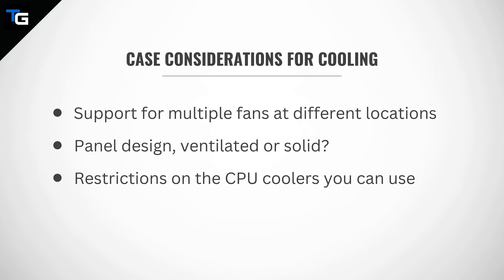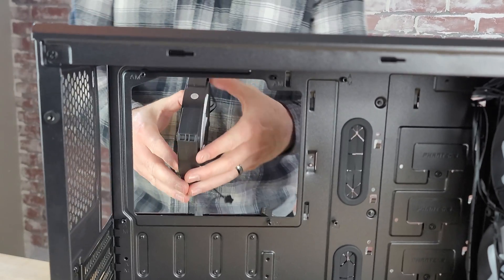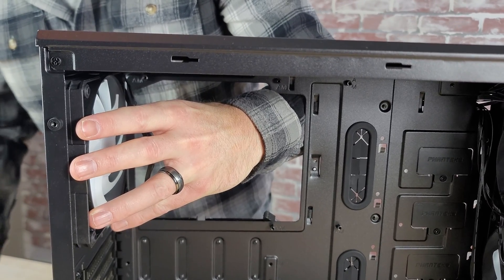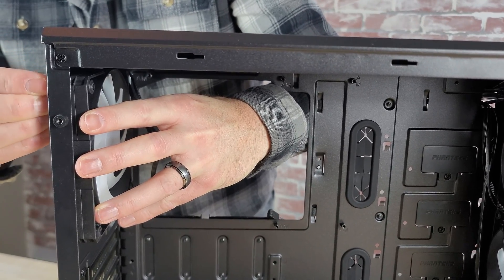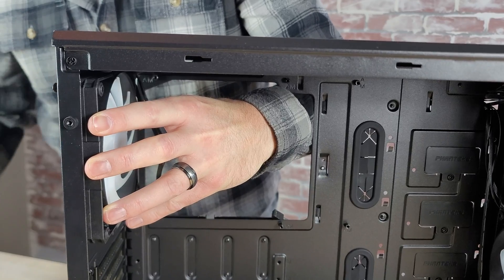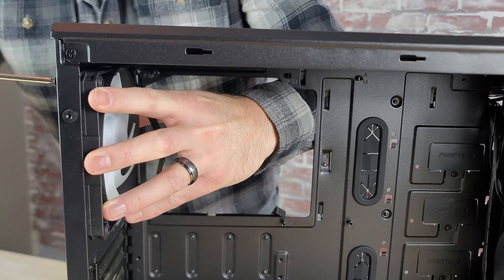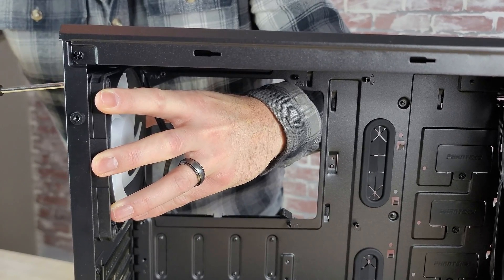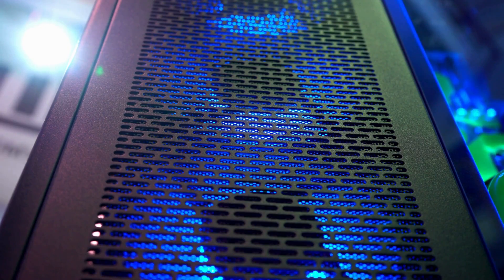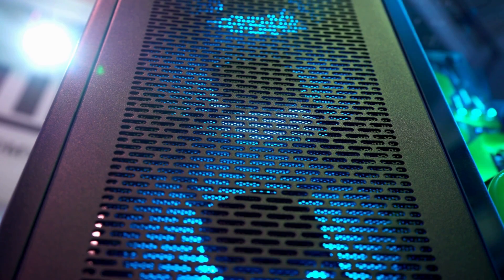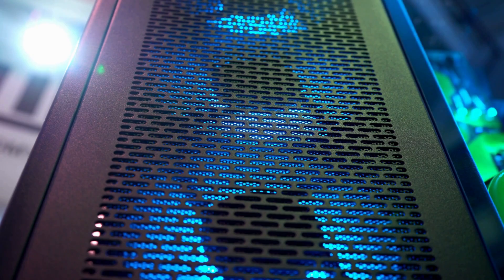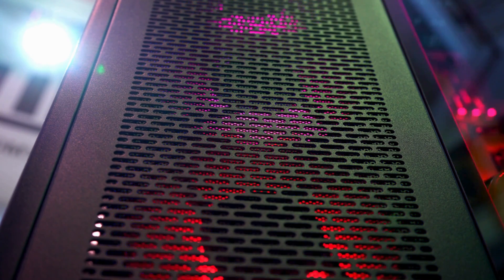If you want to choose a case with high airflow and good cooling capability, consider the following. First, the case should have the ability to accommodate multiple fans at various locations. This doesn't necessarily mean the case has to come with a bunch of fans pre-installed, although that is a major plus. Most cases only come with a few fans pre-installed, and cheaper cases typically come with only one. But budget permitting, try and choose a case that has the option to add multiple fans, and one that can accommodate fans on the front and back or top, so you can intake air from the front and exhaust it out the back or top.